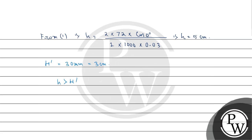Since h is greater than H dash, the tube is of insufficient length and water will rise up to the top end of the tube. However, it will not overflow. Instead, it will change the radius of curvature of the meniscus from small r to capital R. So H dash equals small r multiplied by h divided by capital R. Further solving this, the radius of meniscus capital R equals 0.03 multiplied by 5 divided by 3, giving us 0.05 centimeters.